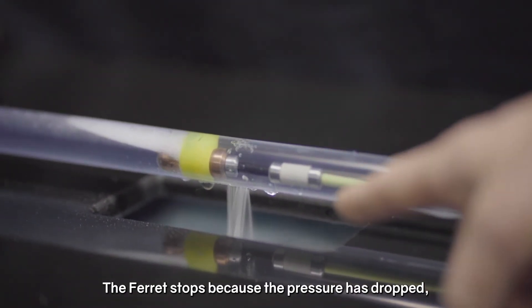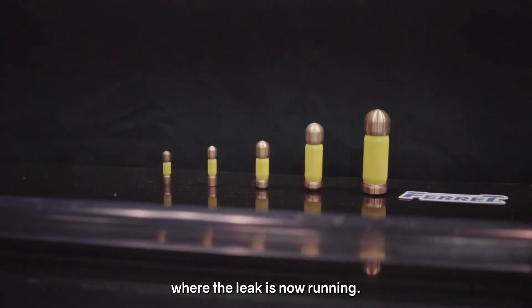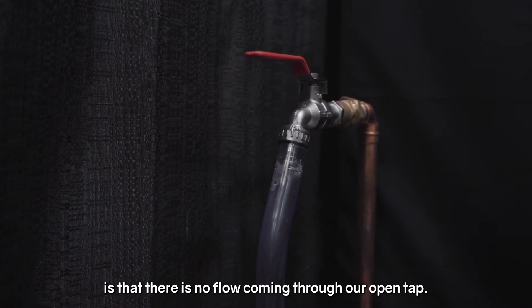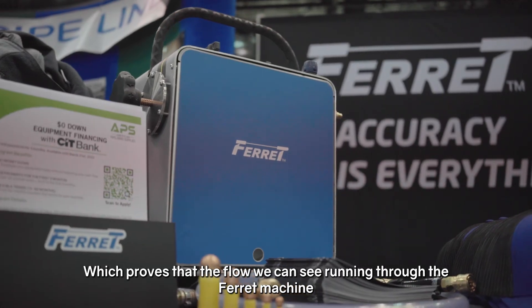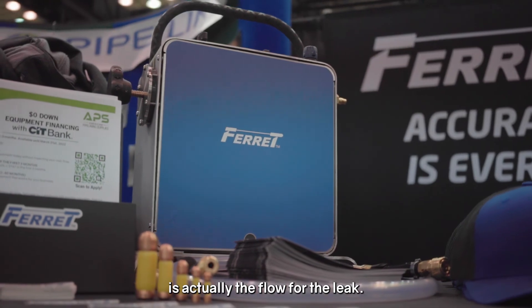The ferret stops because the pressure has dropped where the leak is now running and what we can see at the end there, there's no flow coming through our open tap which proves that the flow we can see running through the ferret machine is actually the flow for the leak.